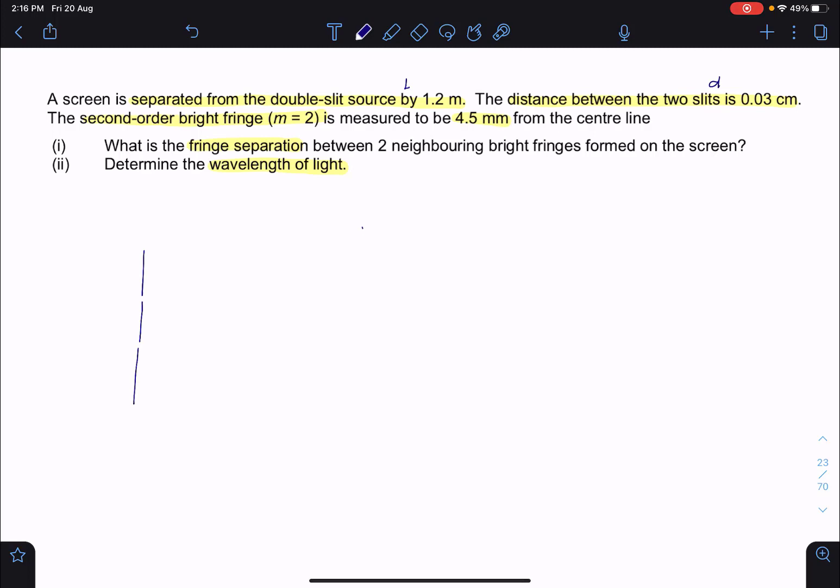and then there is a screen. And this screen is 1.2 meter away from the double slit. I'm going to call this big L. And we are told that the distance between the two slits, this D, is equal to 0.03 centimeters. Just be careful, we are working in centimeters, so we must actually convert it later.